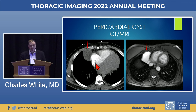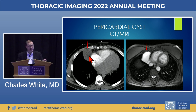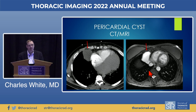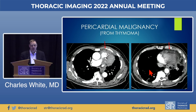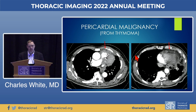A pericardial cyst — sometimes called a spring water cyst — classically has very low density on CT (0–20 Hounsfield units) and appears light-bulb bright on T2-weighted MRI. Pericardial malignancy, by contrast, is very irregular, soft tissue density, and somewhat nodular. In this case, it was a thymoma from the mediastinum that had spread into the pericardium.